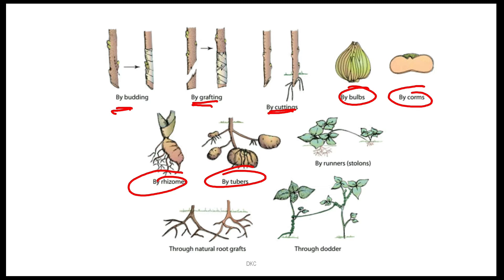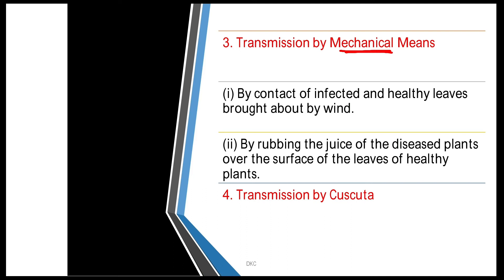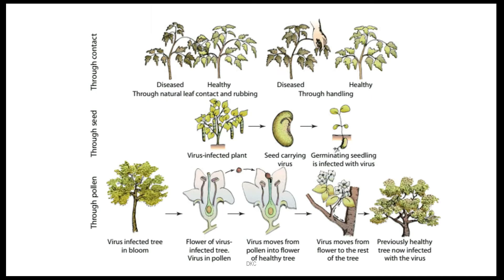Transmission by mechanical means — by contact of infected and healthy leaves brought about by wind, or by rubbing the juice of diseased plant over the surface of leaves of healthy plant. So if an infected host is present and next to it is a healthy host, and the leaves of both rub and scrape against each other, the virus transmits from infected to healthy host. For example, tobacco mosaic virus.